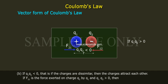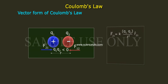If F21 is the force exerted on the charge Q2 by Q1 and Q1 Q2 greater than 0, then F21 bar is equal to K into Q1 Q2 by r square into r21 cap, where r21 cap is the unit vector pointing from Q2 to Q1.